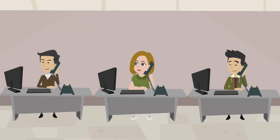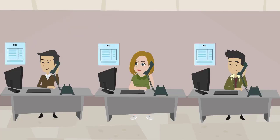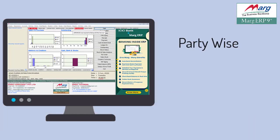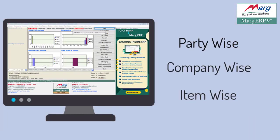Apart from this, when a party gives you an order, at the time of billing you need to manually check whether that party has a license or not. Doing this process takes at least 10 to 15 minutes on each and every call and it also affects your sales. To get rid of this problem, Mark Software has provided the provision of party-wise, company-wise, and item-wise mapping. This helps you map parties with the products of companies that require a drug license, food license, or both.